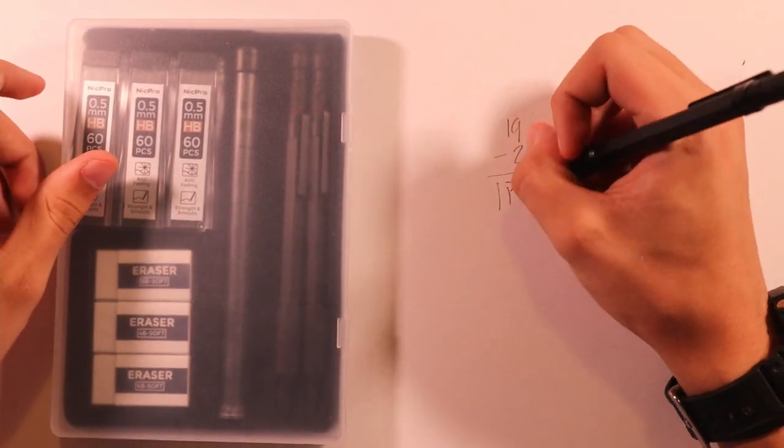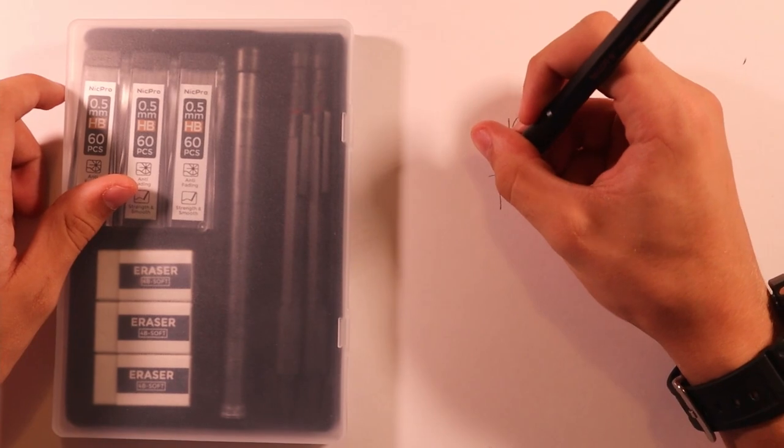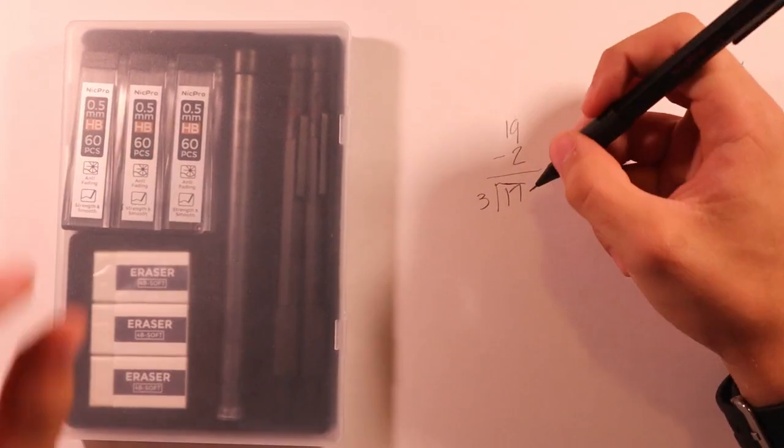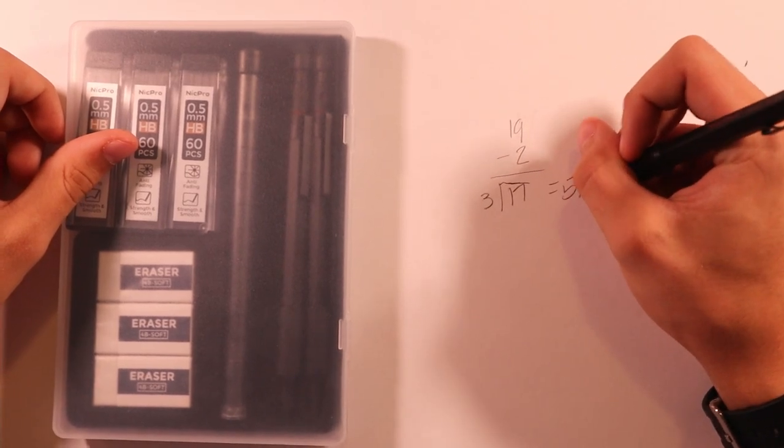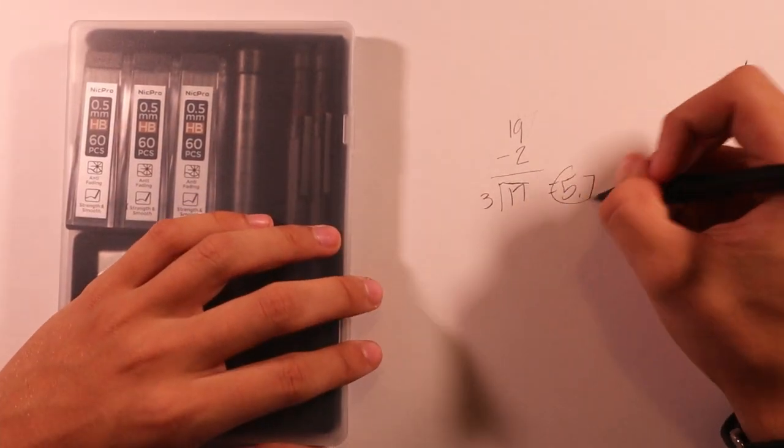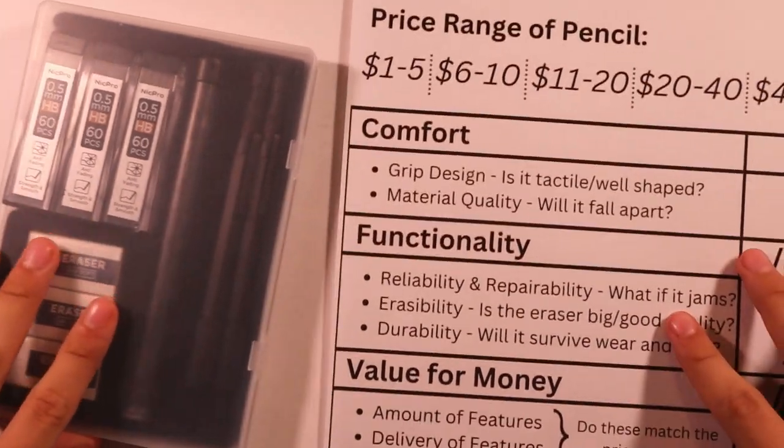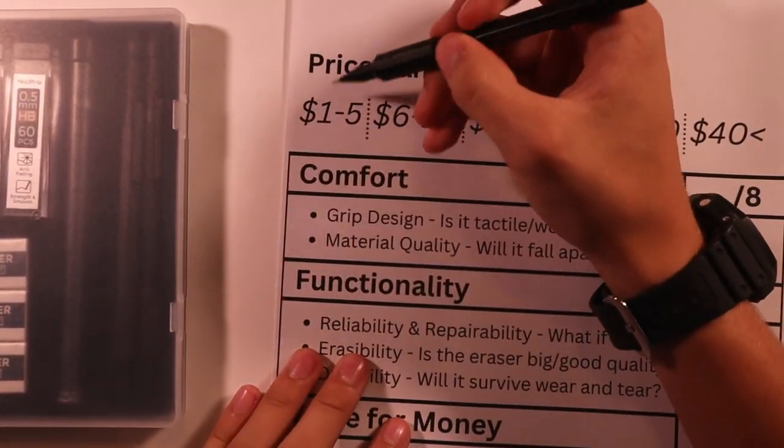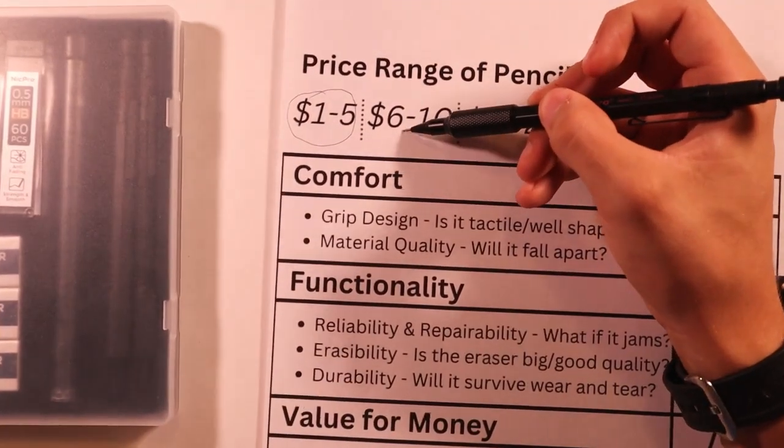Now, there's three pencils, so we'll divide... Oh, okay. So, the lot just broke. We'll divide that by three, and that equals about $5.7. I'm not going to pretend I did that in my head. I had this calculated way before this. So, $5.7 per pencil, which for our review sheet, gives us just barely in the $1 to $5 range.